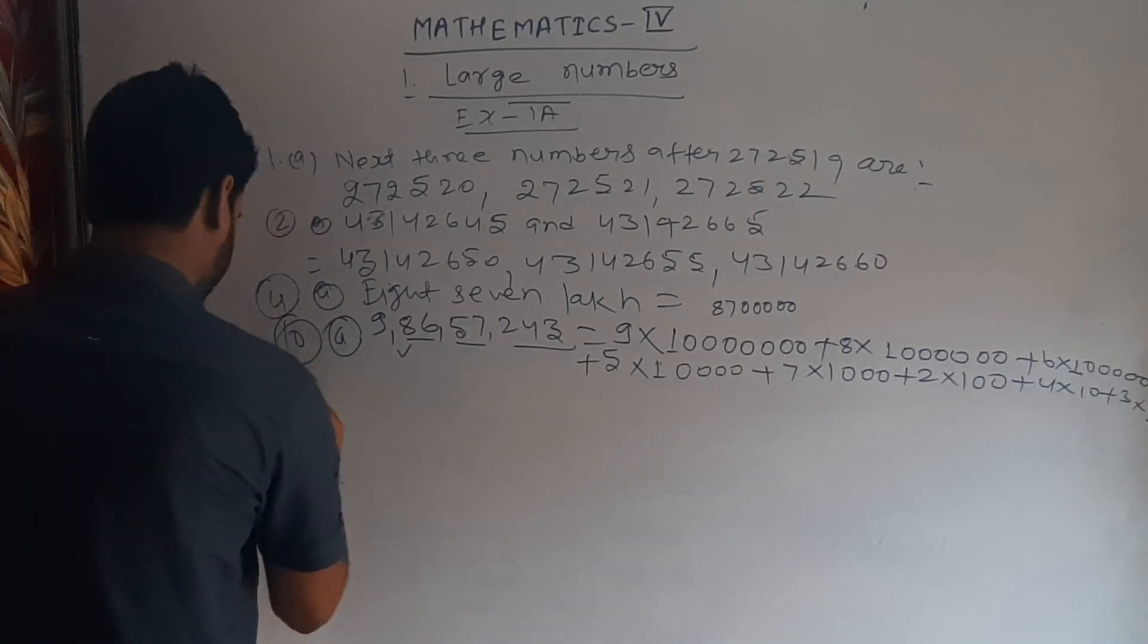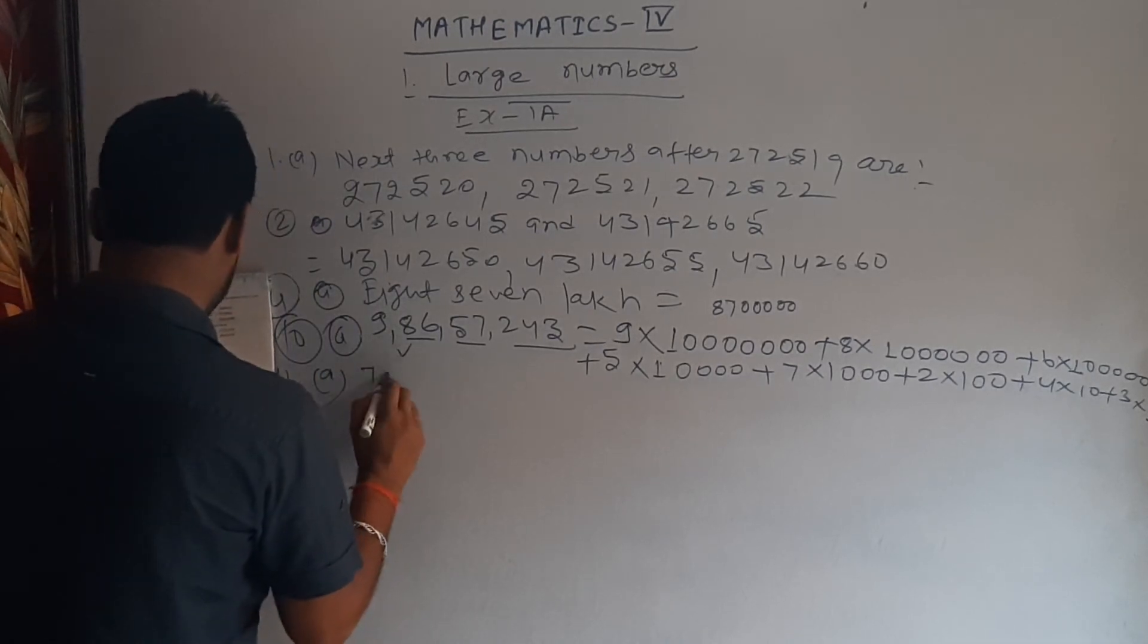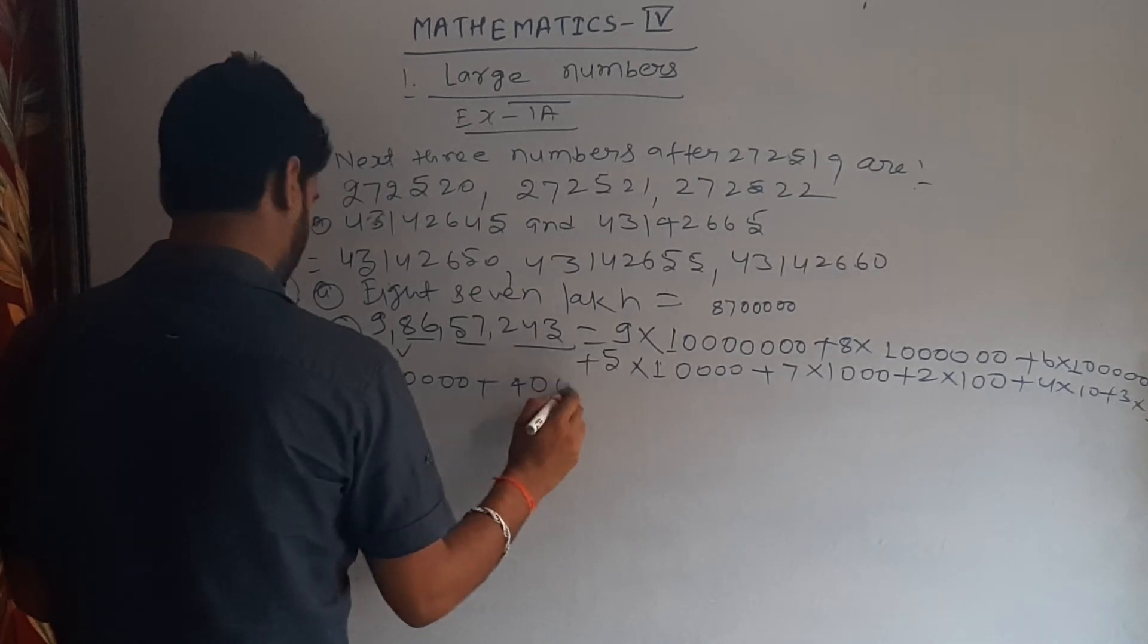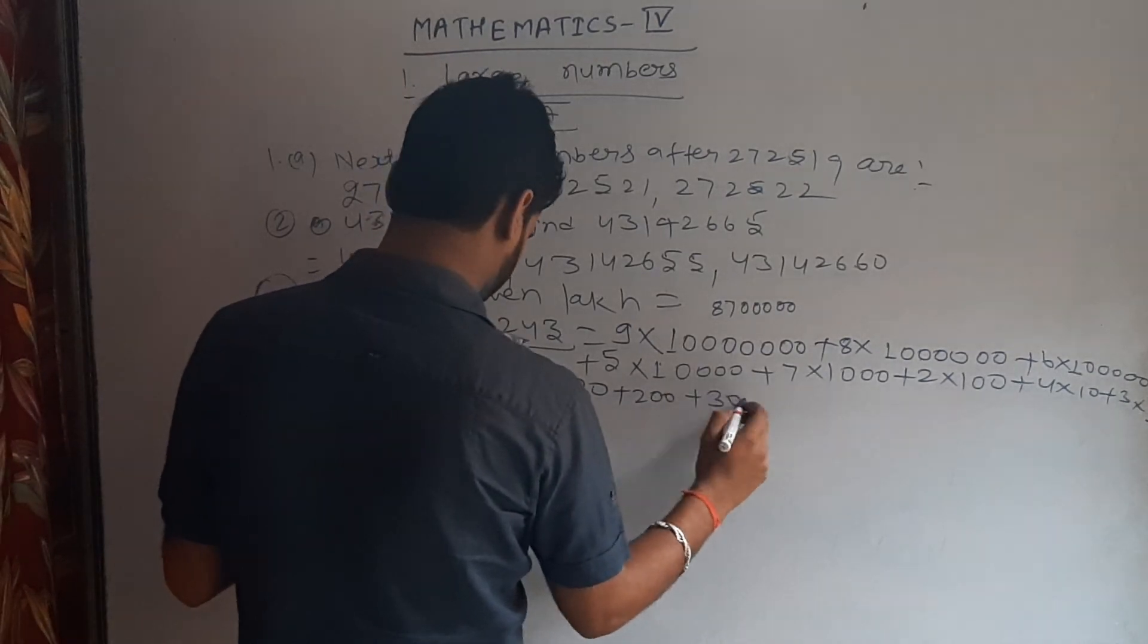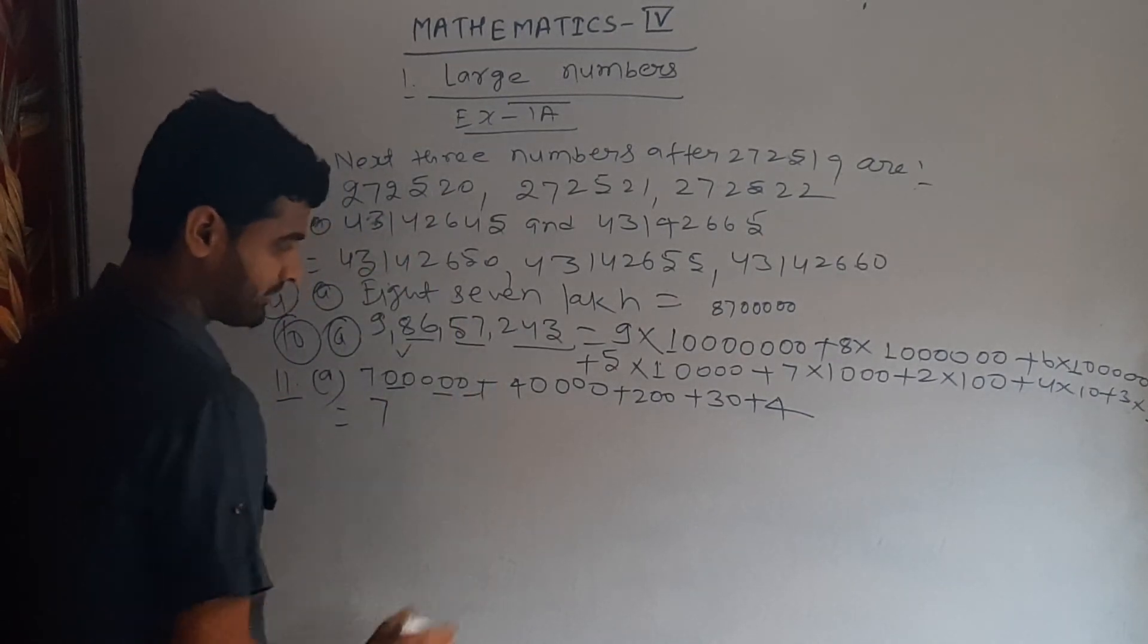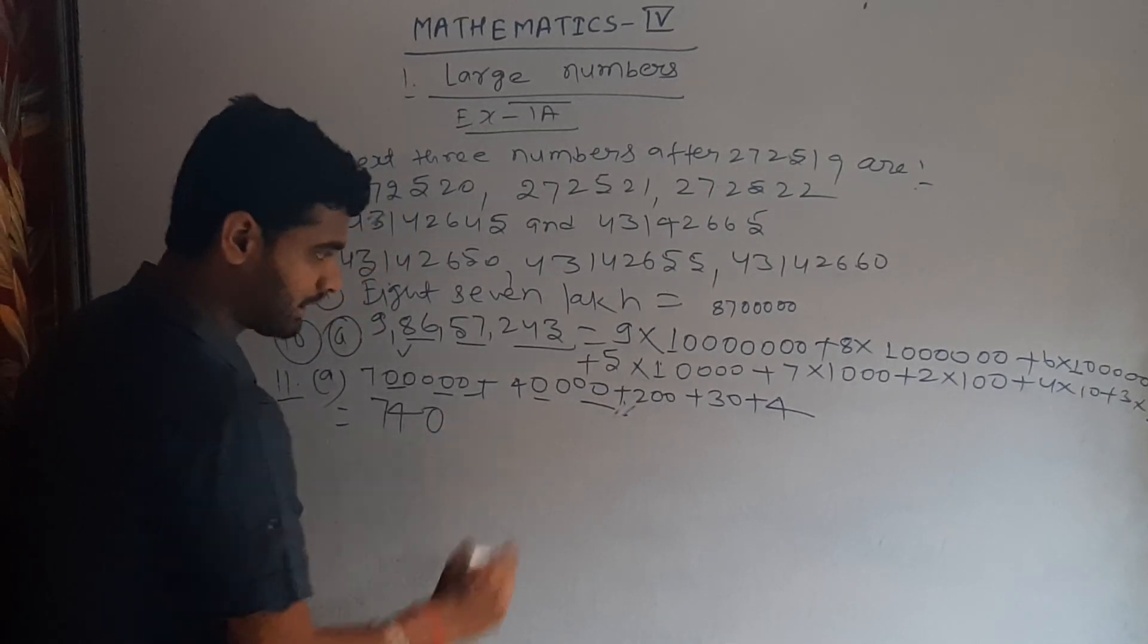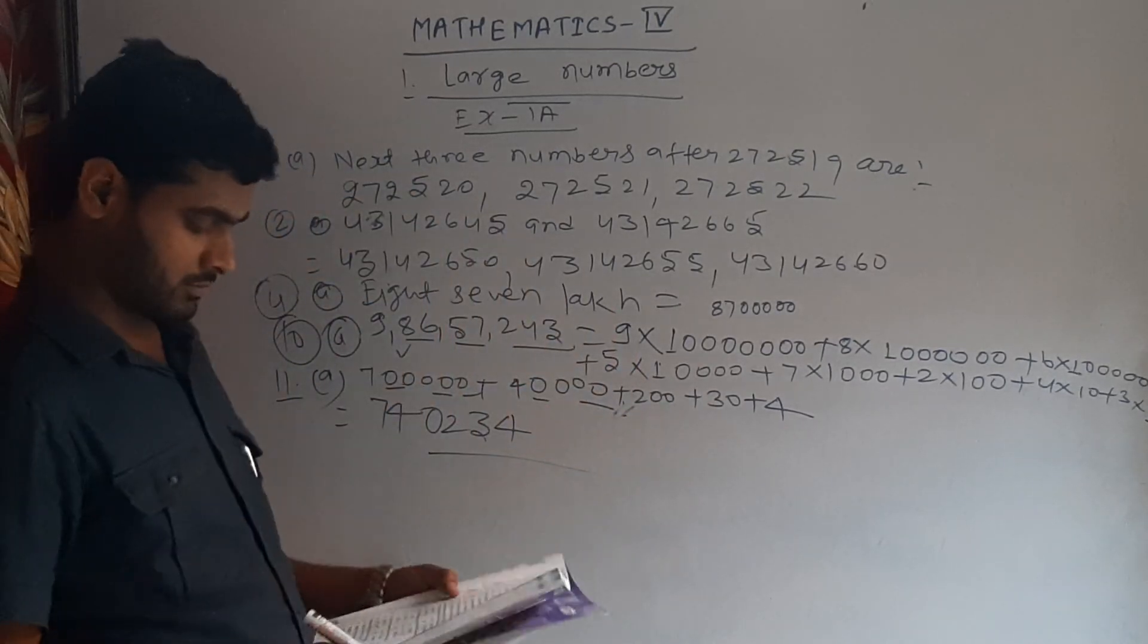And question number 11: write the following number in standard form. 7,00,000 plus 4,000 plus 200 plus 30 plus 4. So firstly we write 7, 5, 0 after that 4, 0, so we write 4. 5, 0, but there are none in this with three zeros so we write up 0, then 2, then 3, and then 4. So that's all.